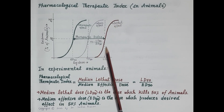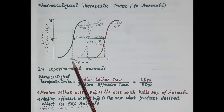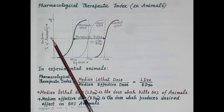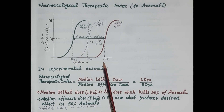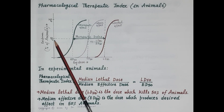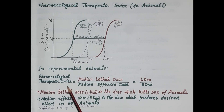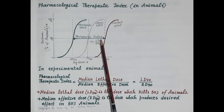ED50 is the median effective dose that produces the desired therapeutic effect in 50% of animals. LD50 is the median lethal dose that kills 50% of the animal population. The pharmacological therapeutic index is the ratio of LD50 to ED50. Wider is this therapeutic index, safer is the drug.